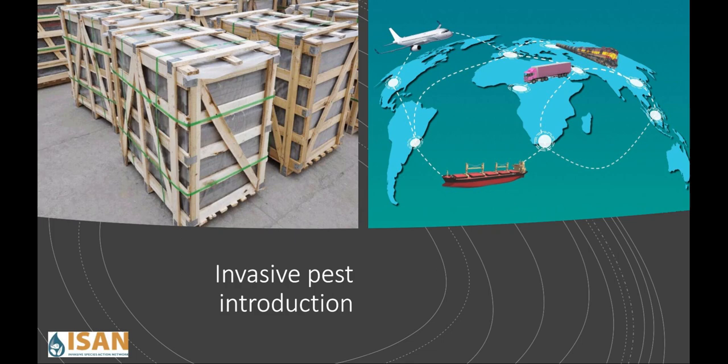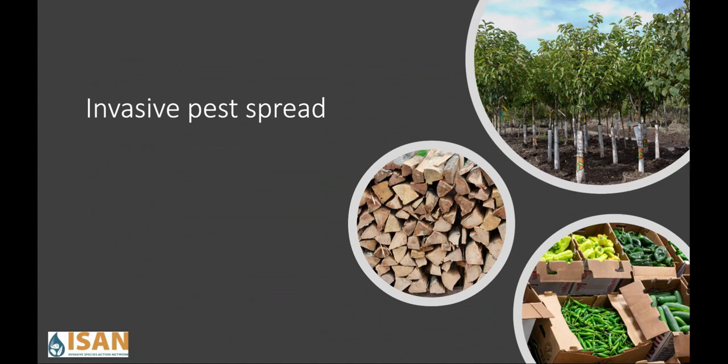It's really important to keep in mind that all of our activities are moving pests around, so we have to be very mindful and pay attention to those activities. Once an invasive pest has arrived in a new place, it can spread further on things like firewood, nursery plants and trees, and all different kinds of food. We need to pay attention to what might be hitchhiking on these things and make sure they're not moving into new locations.